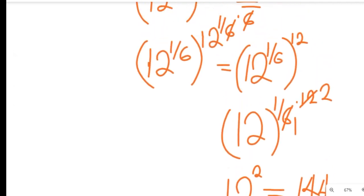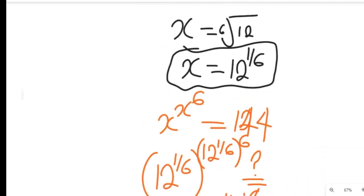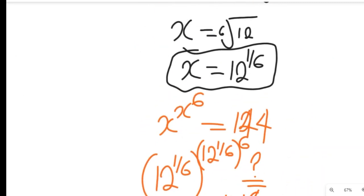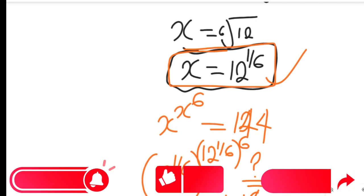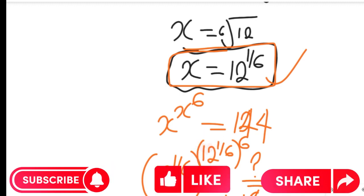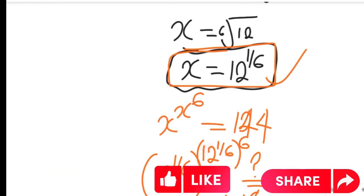So we see the solution to that question — x equals 12 to the power of 1/6 — is absolutely correct. I hope you enjoyed this video. Don't forget to give it a thumbs up, subscribe to my channel for more Math Olympiad solution videos, and remember to share this video with friends and colleagues. Thanks and bye bye for now!